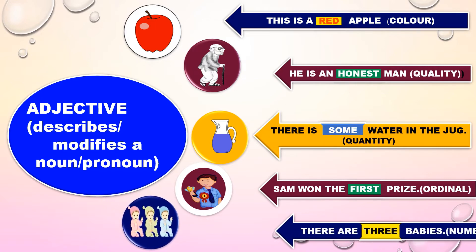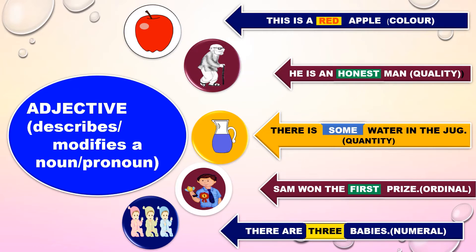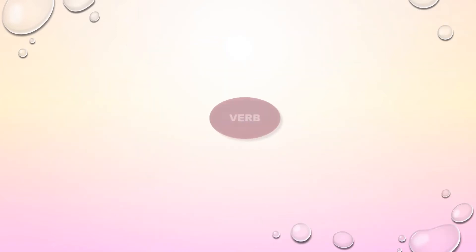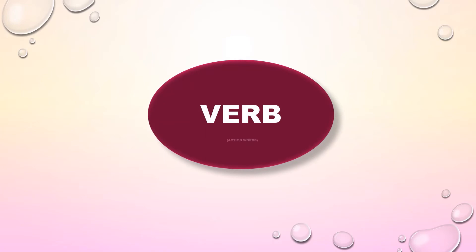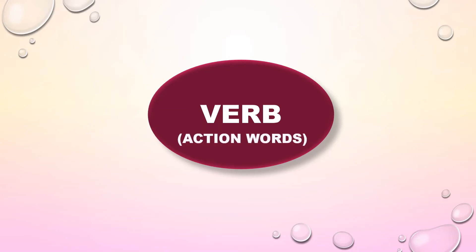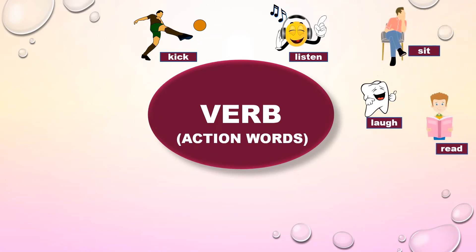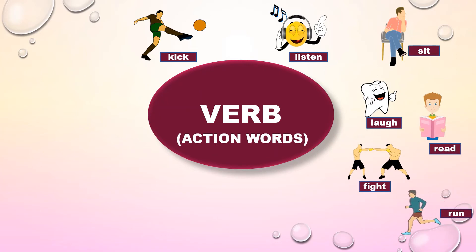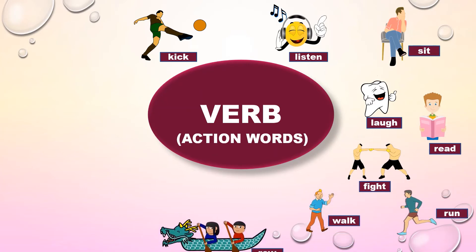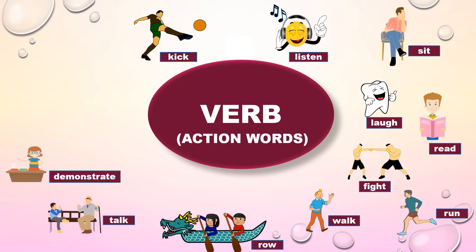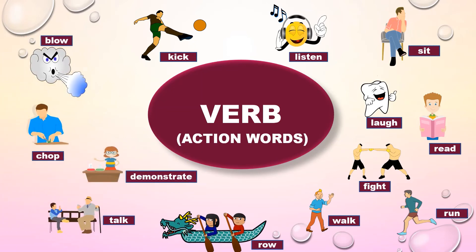There are three babies — here three is the adjective, referring to numeral. Now let us see verb. Verb is a word used to express an action or state. In short, we can call them action words. Some examples: pick, listen, sit, laugh, read, fight, run, walk, row, talk, demonstrate, chop, blow.